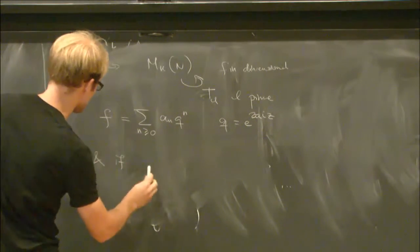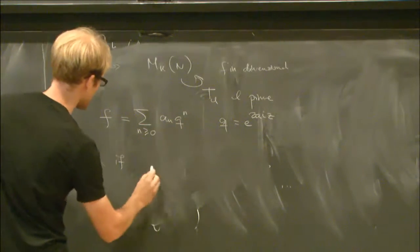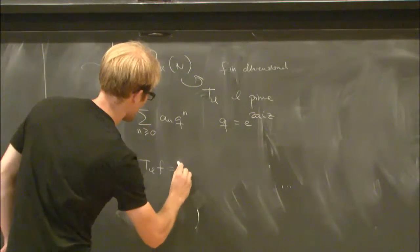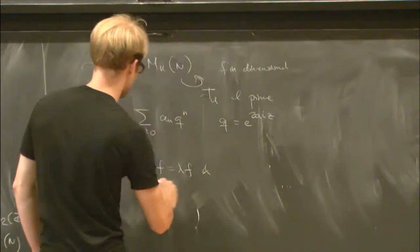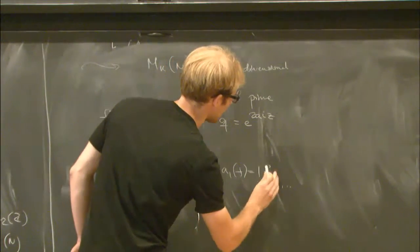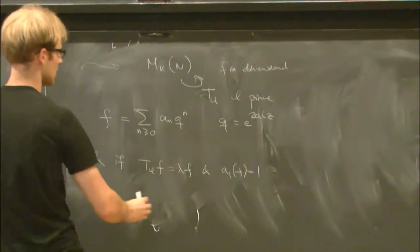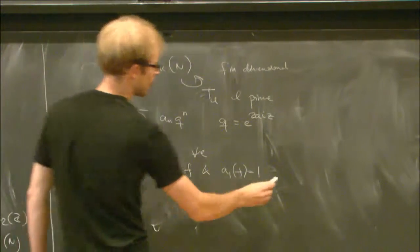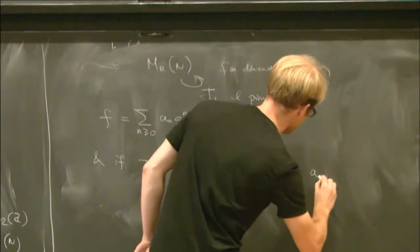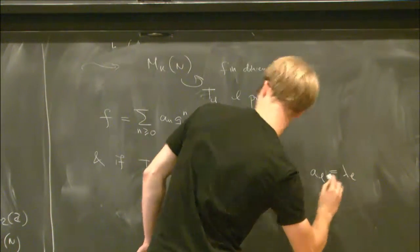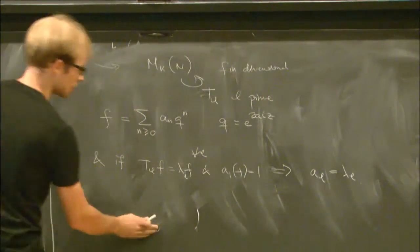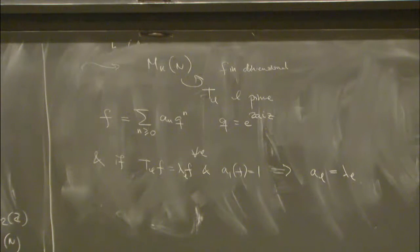So I said that these were simultaneously diagonalizable, so if I have such a simultaneous eigenvector, then I can always normalize it so that the first Fourier coefficient is 1, and then the link between the Fourier expansion and the eigenvalues is that the l-th Fourier coefficient is simply the T_l eigenvalue. So I'm going to call such gadgets eigenforms.